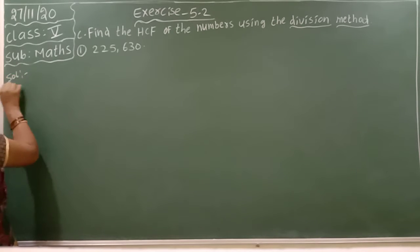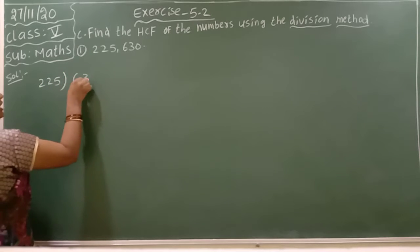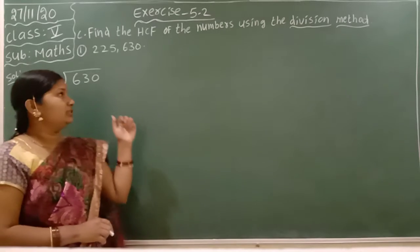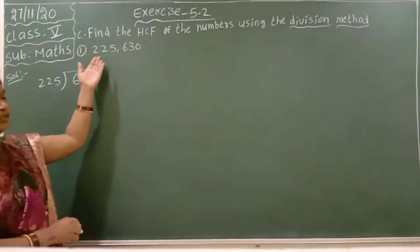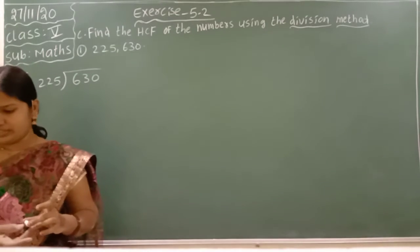The given numbers are 225 and 630. First of all, start the answer. Solution. Here, 225 take as a dividend and 630 as a divisor.